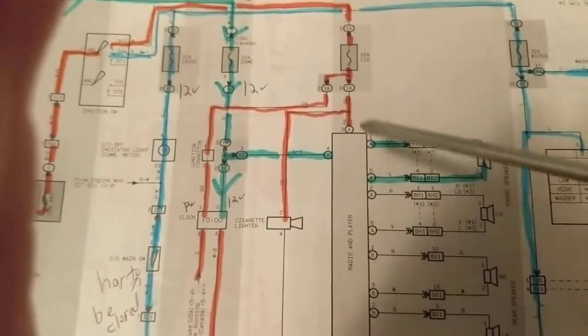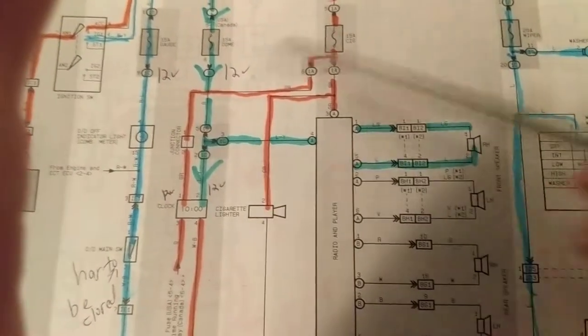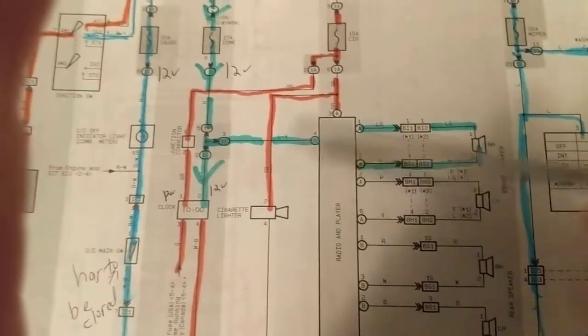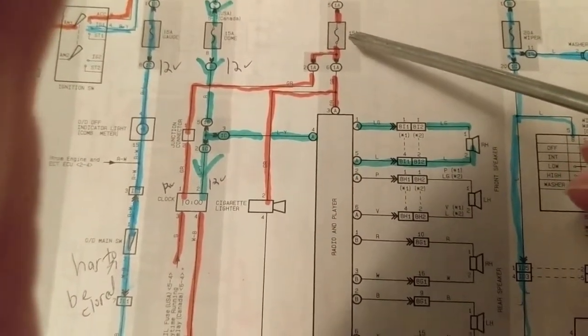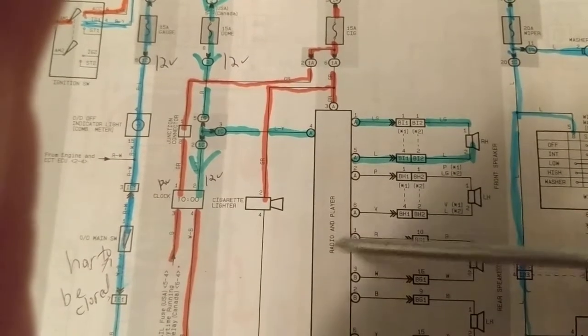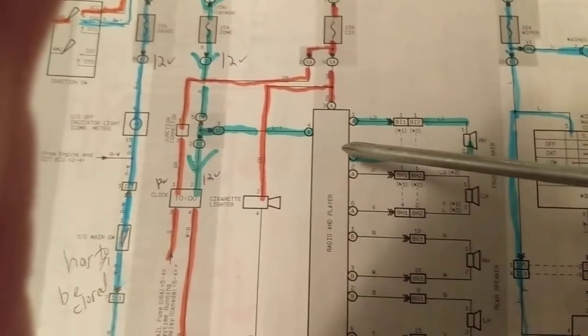Radio works, clock works. Cigarette lighter does not work, which happens a lot. Can it be the fuse? No, it cannot be the fuse. Why can it not be the fuse? Because my radio is working. My clock display is working. Simple.